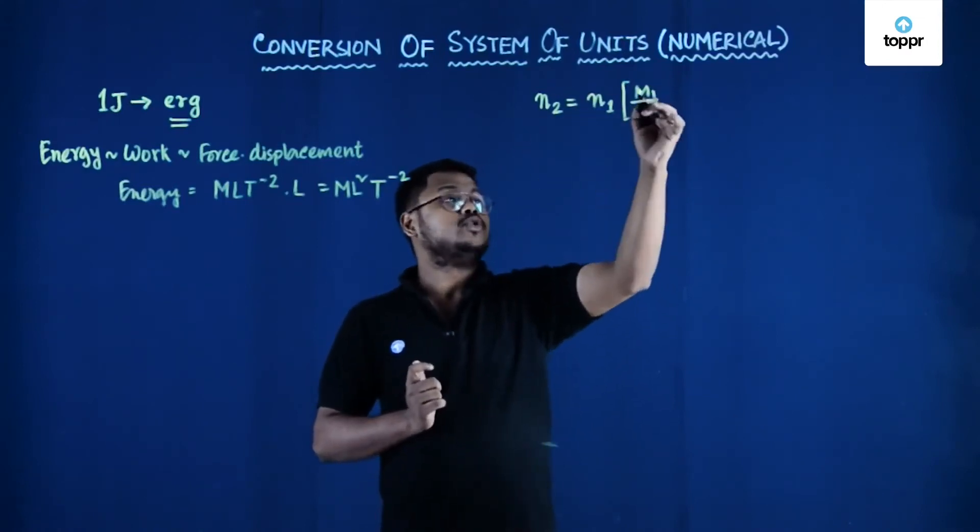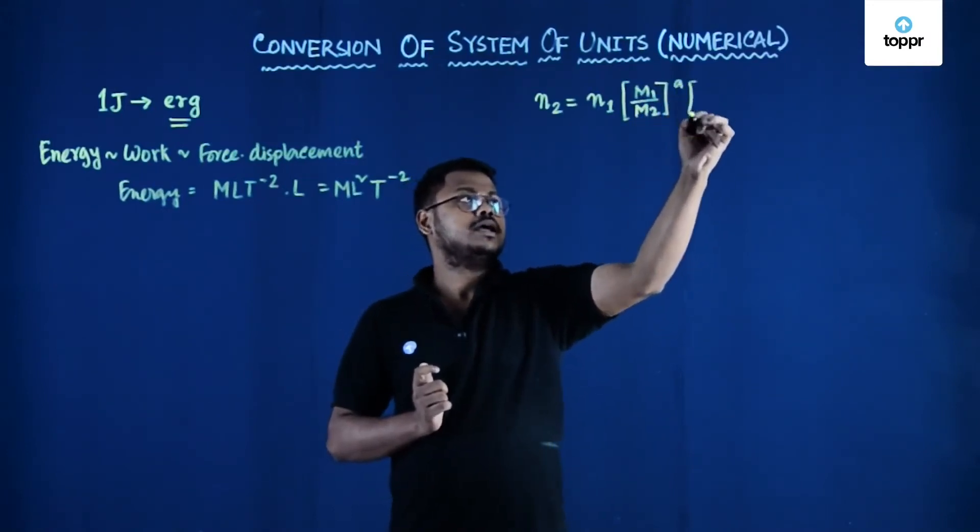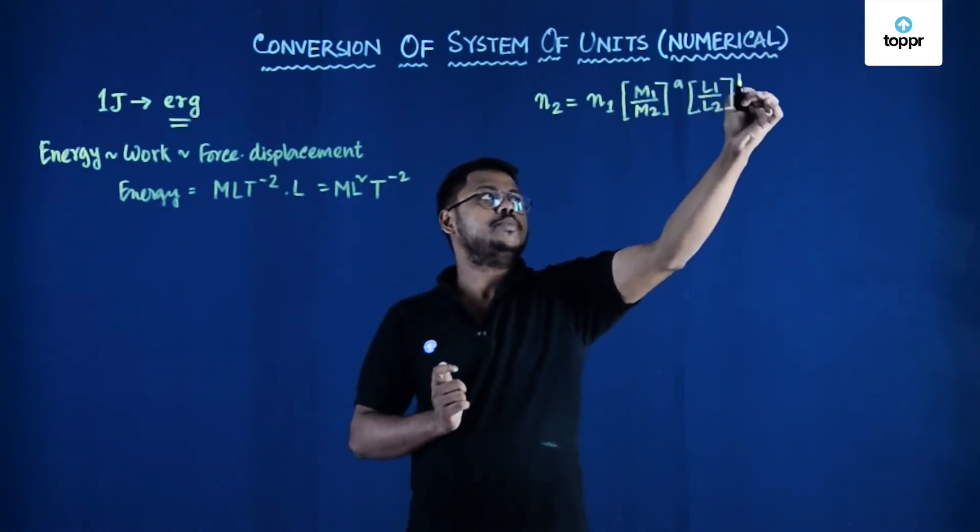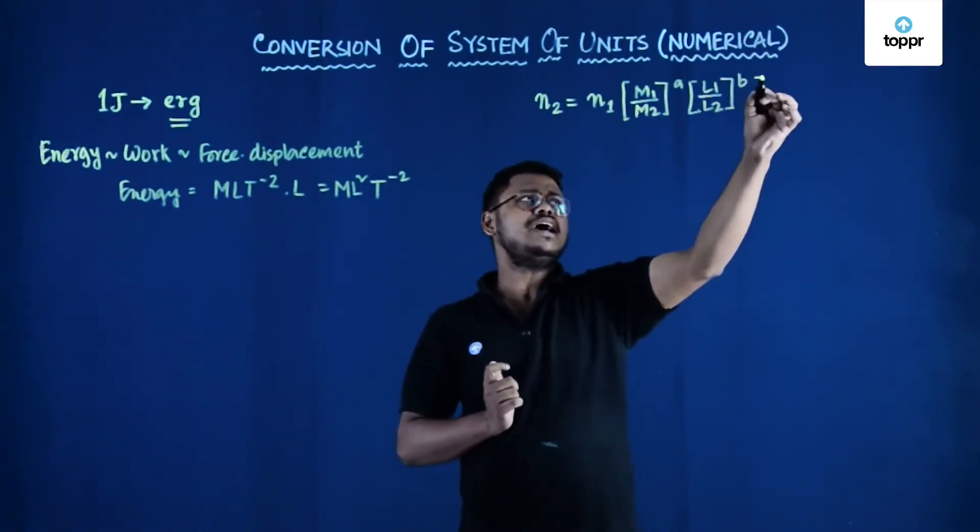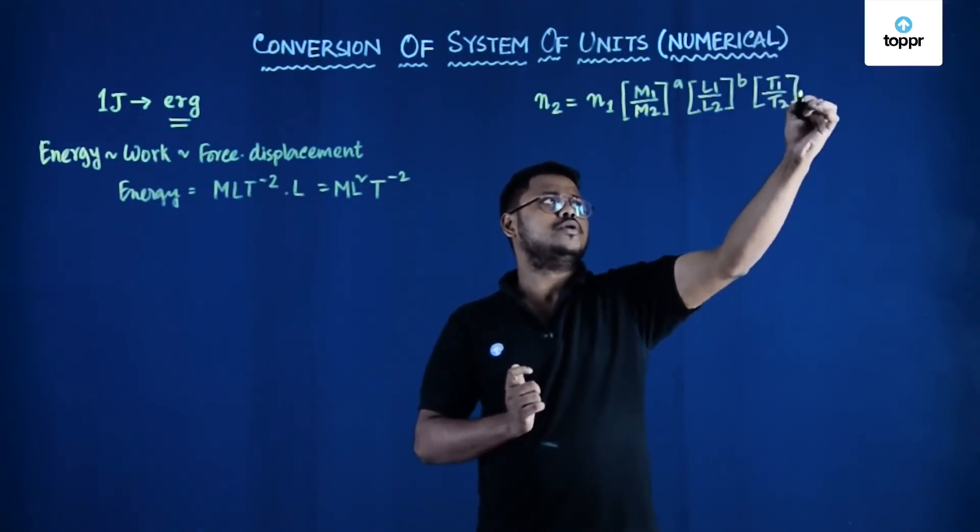So m1 divided by m2 to the power a, l1 divided by l2 to the power b, and t1 upon t2 to the power c.